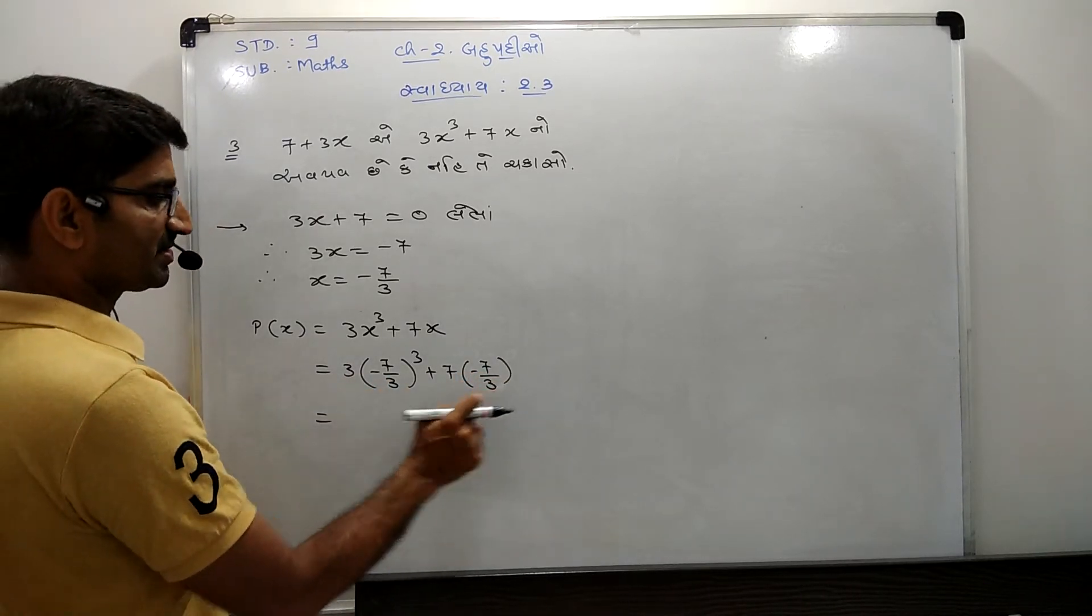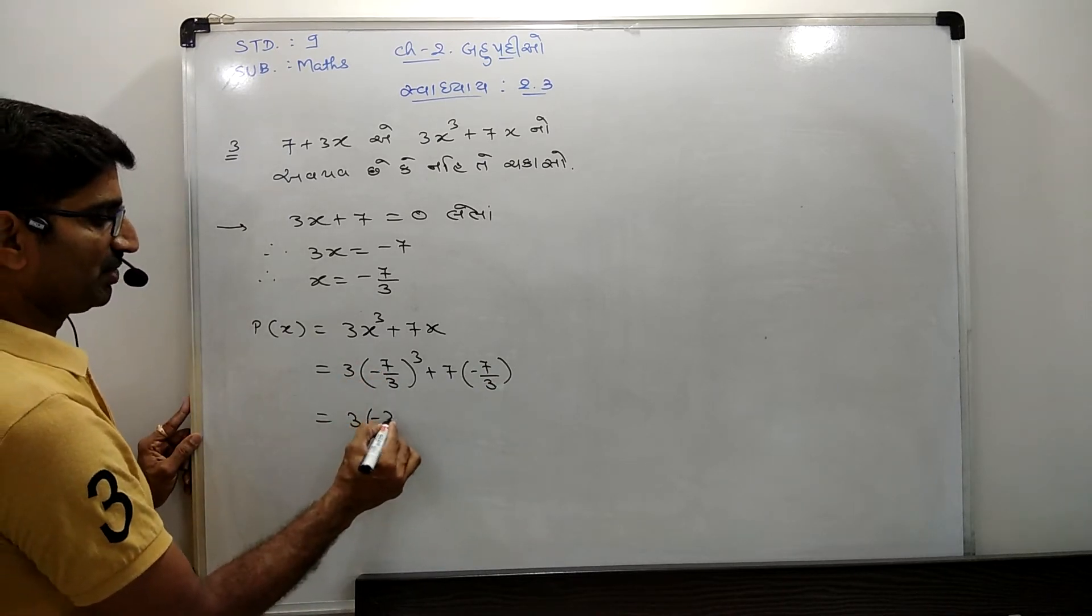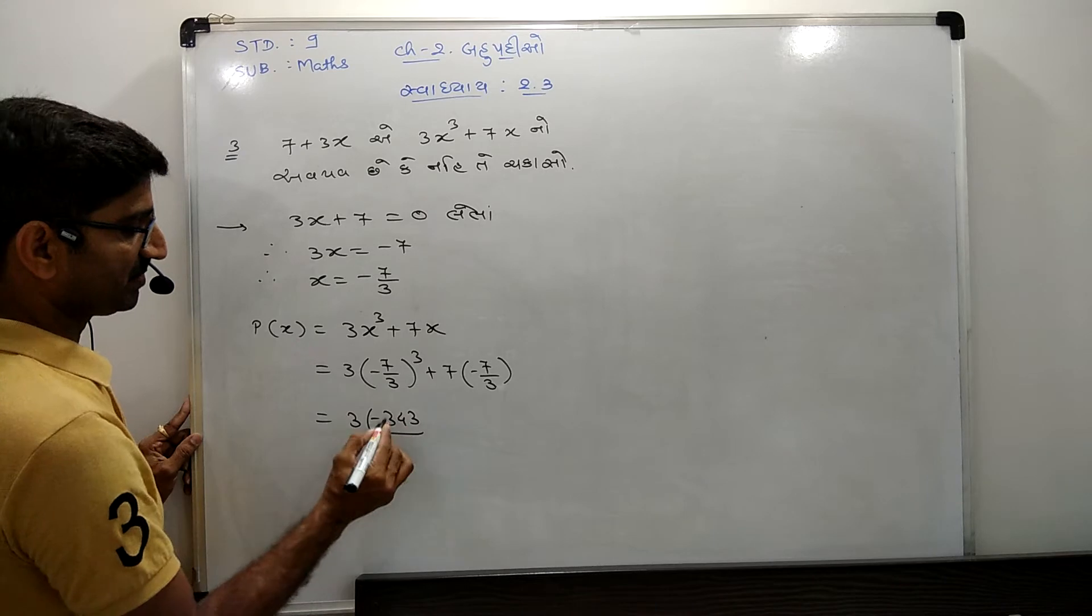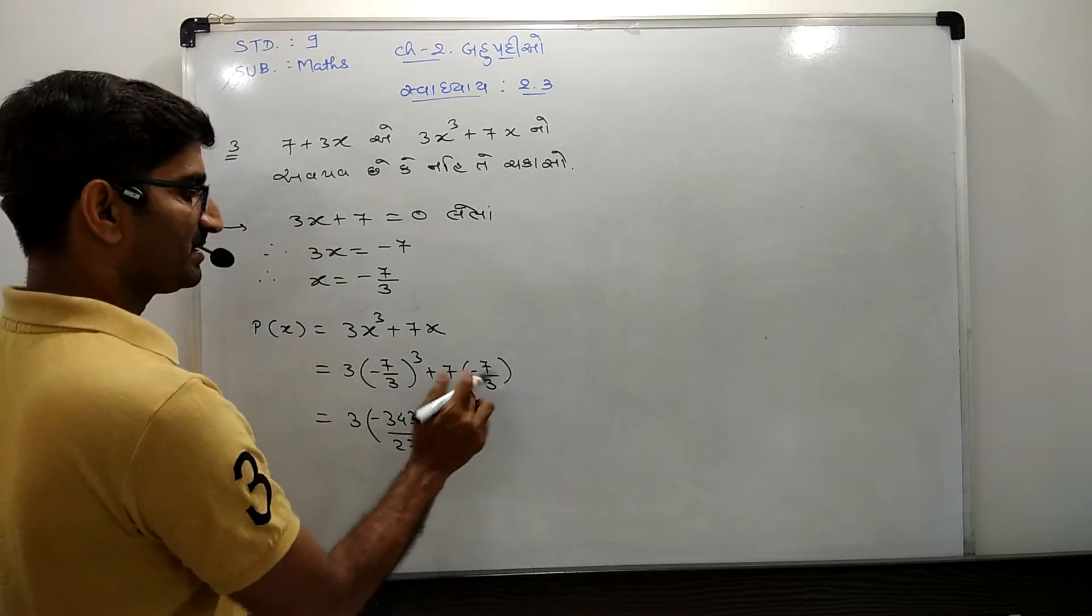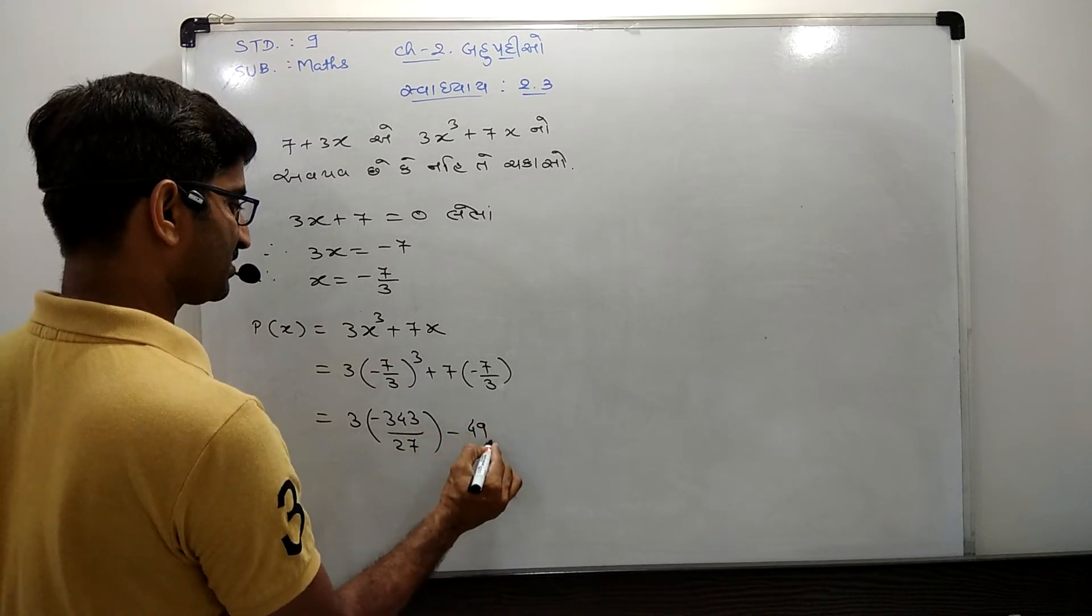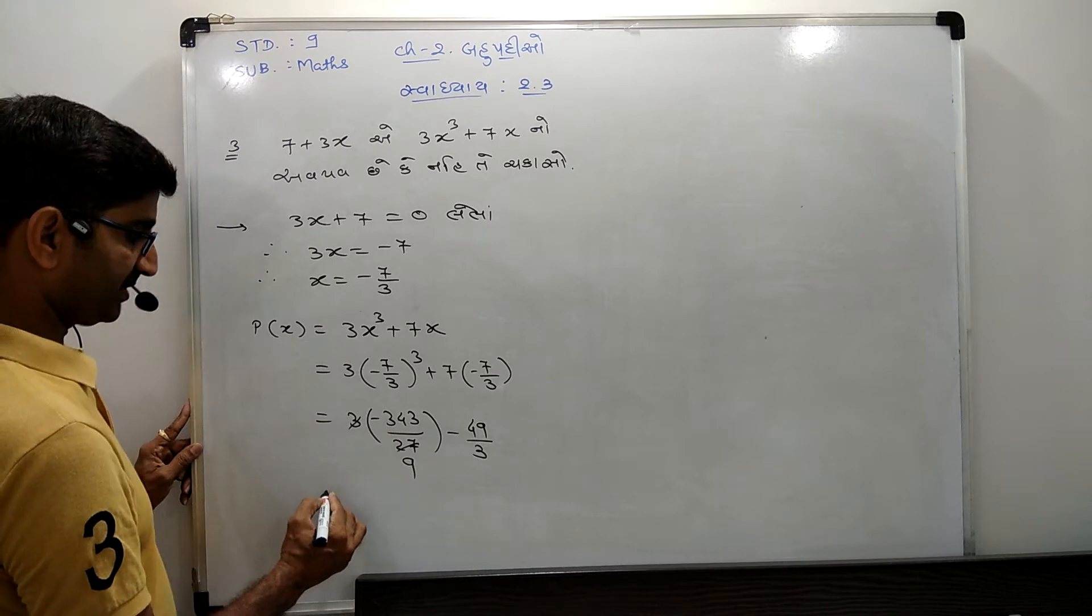So, 3x plus 7 is equal to 0. Therefore, 3x plus 7 plus 7 upon 3. So, 3x plus 7 upon 3.